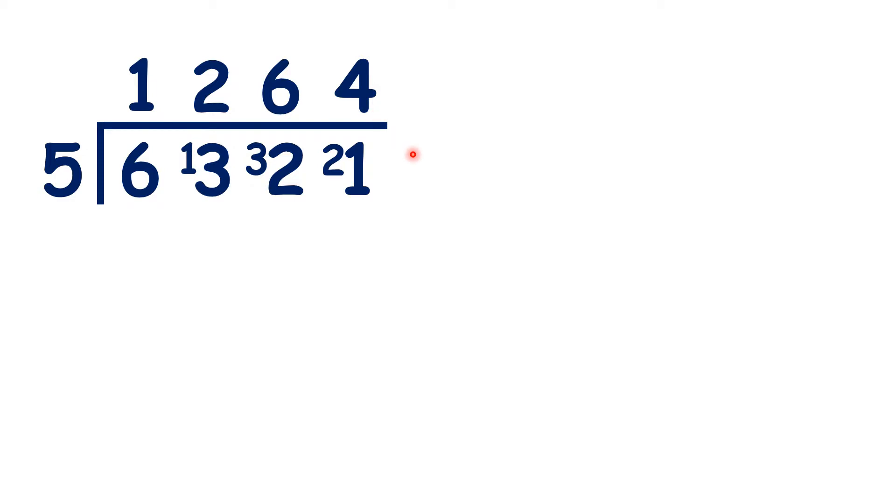Well, let's extend our place values with a point 0. Now we haven't changed the question because 6,321.0 is the same as 6,321. But what that means is that we can write the 1 remainder we have from dividing 21 by 5 in front of the 0 we now have in our tenths.